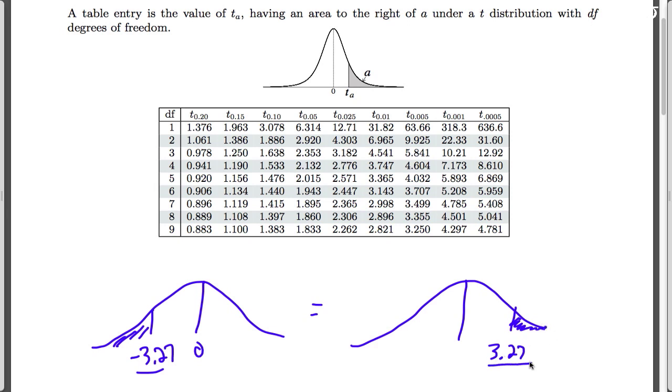Here's my 3.27, I have 7 degrees of freedom. 3.27 falls between these two numbers. And if it falls between these two numbers, then my area must fall between 0.01 and 0.005. So this area is less than 0.01 and bigger than 0.005.